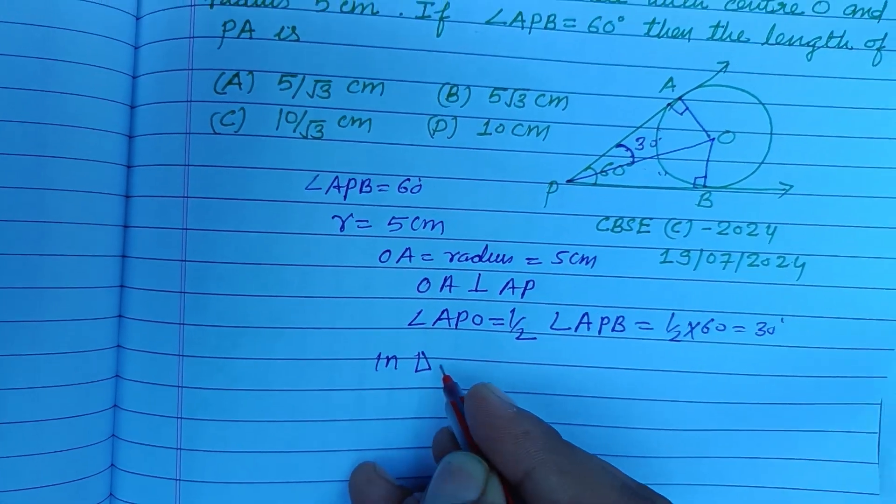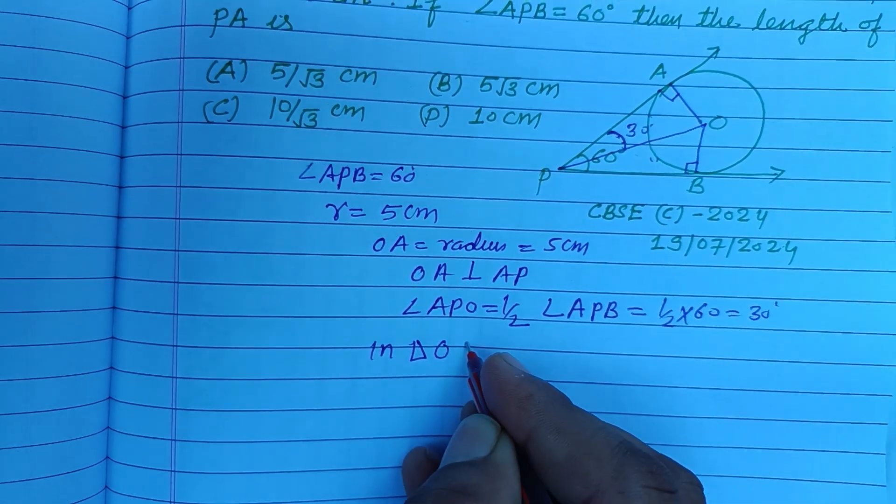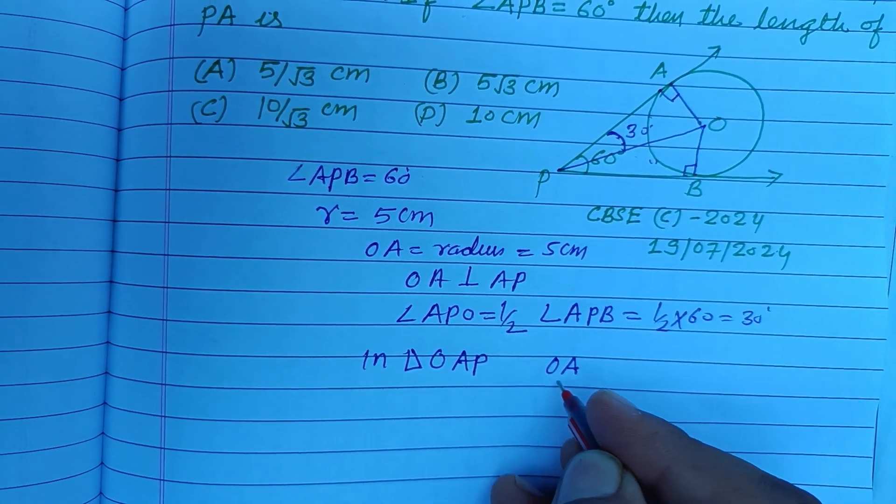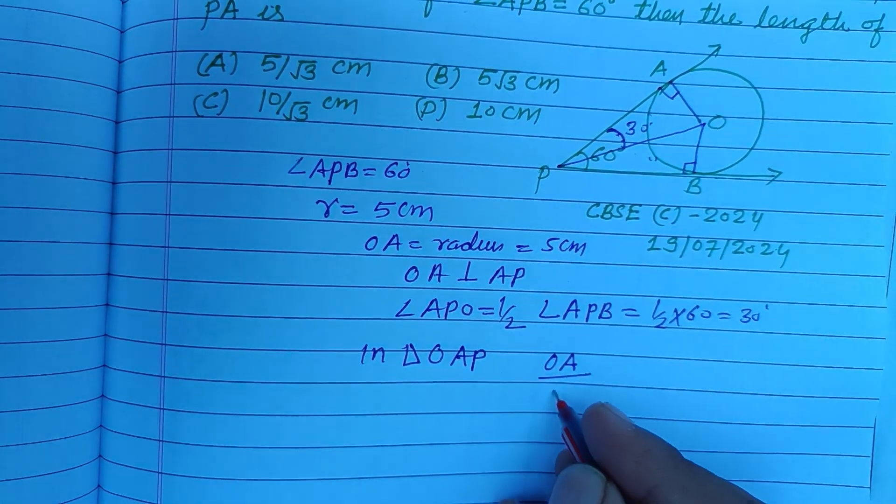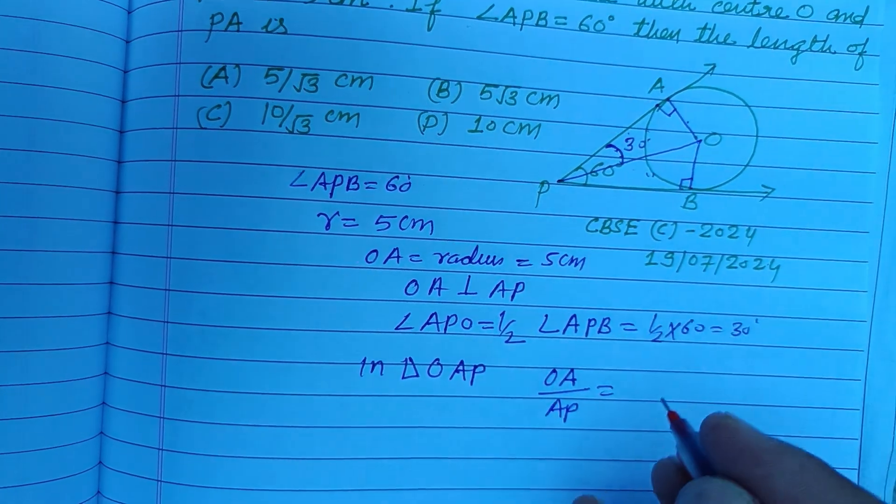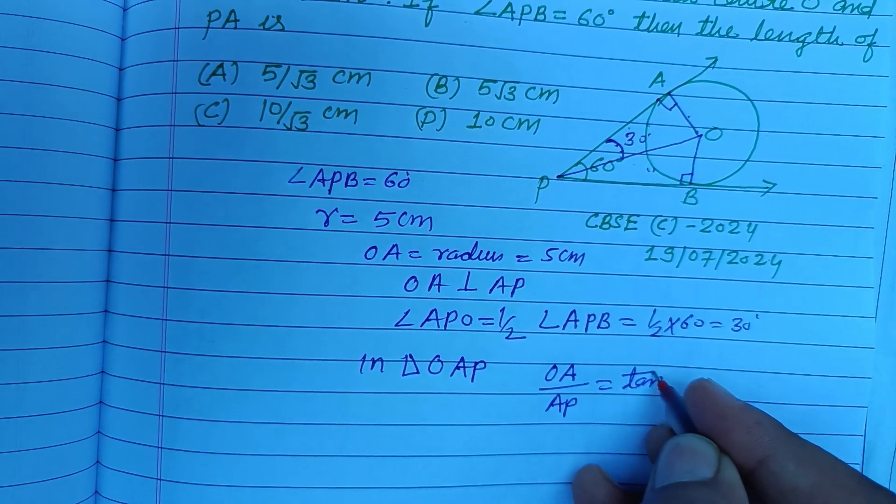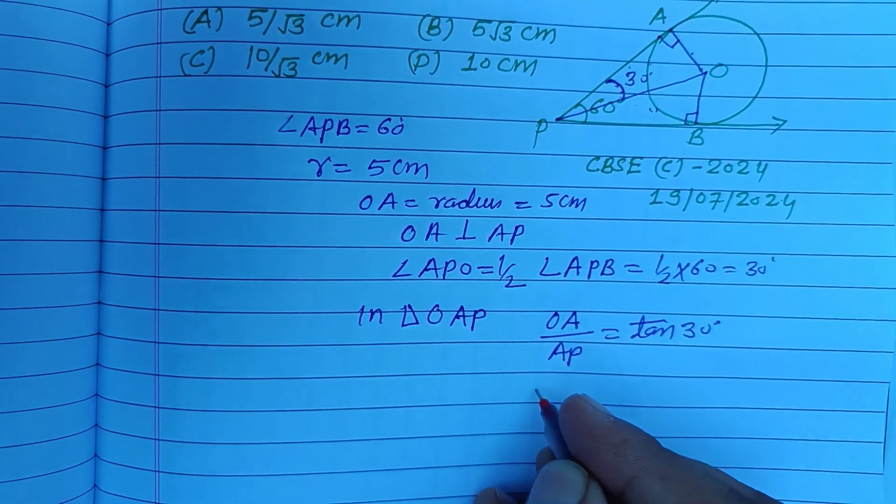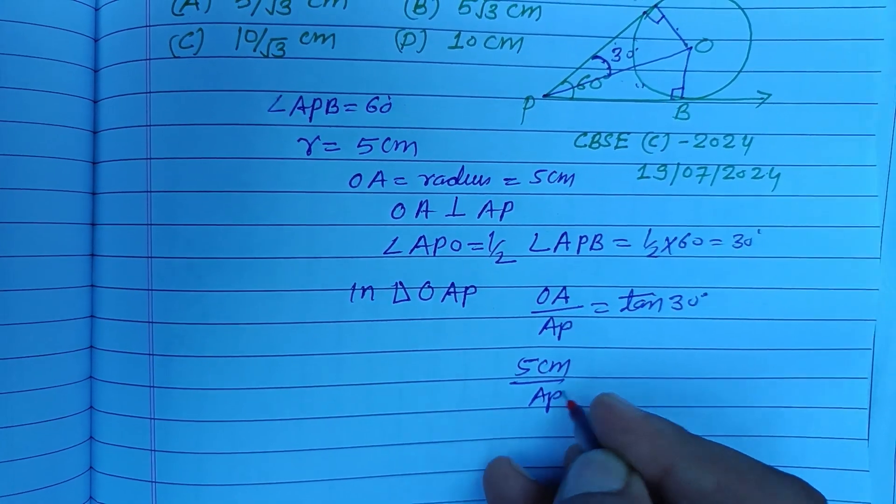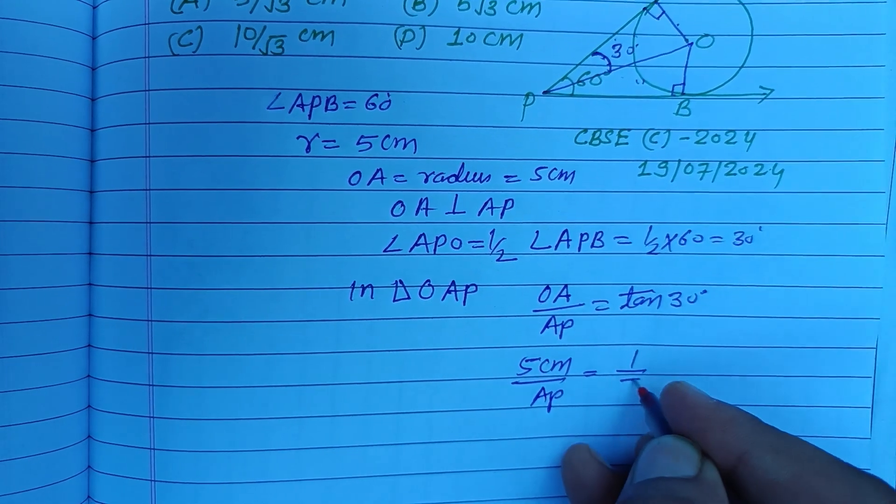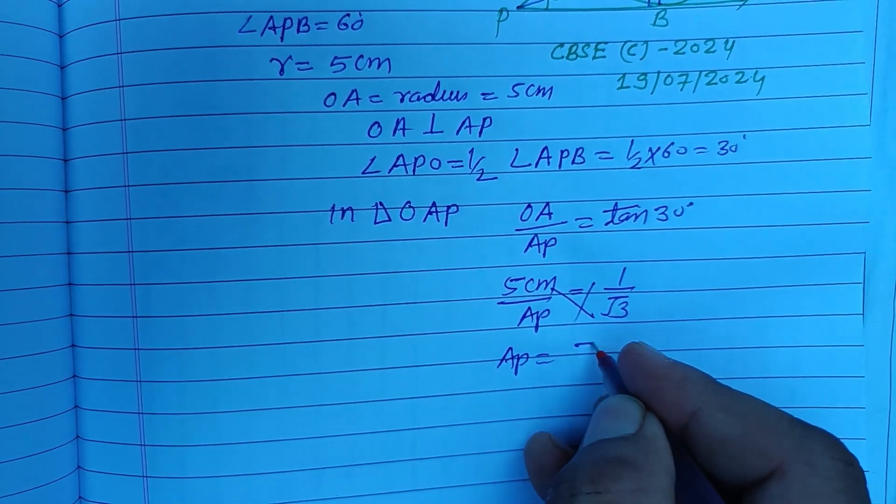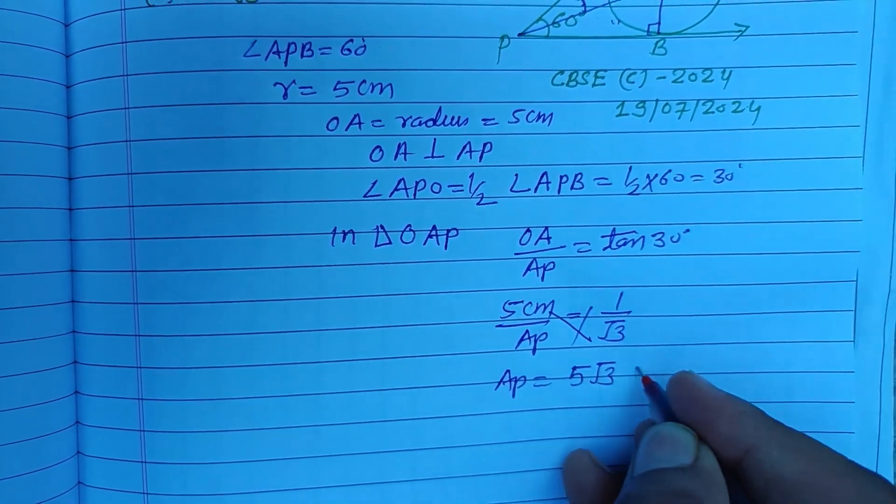Now in right angle triangle OAP, OA over AP, that is perpendicular over base, that is tan 30. So OA is R which is 5 cm upon AP. Tan 30 value is 1 upon root 3, therefore AP on cross multiplication is obtained as 5 root 3 cm.